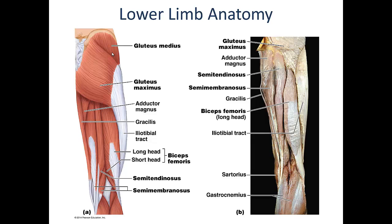Next are what is commonly referred to as the hamstring muscles — the biceps femoris group, which is located most laterally, and the semitendinosus and semimembranosus located more medially. The biceps femoris muscles are comprised of two heads: the long head and the short head. The biggest distinction is that the short head of the biceps femoris is the only hamstring muscle that spans only one joint — it only crosses the knee joint and can only contribute to knee flexion.